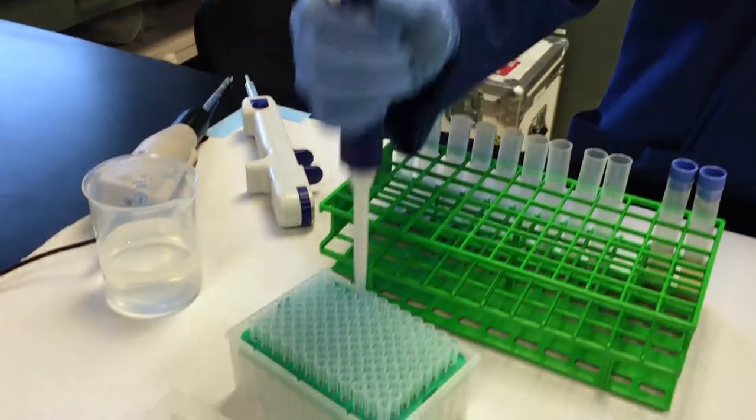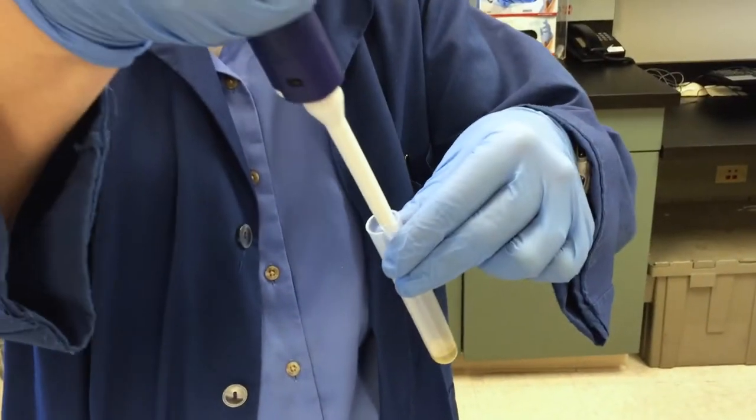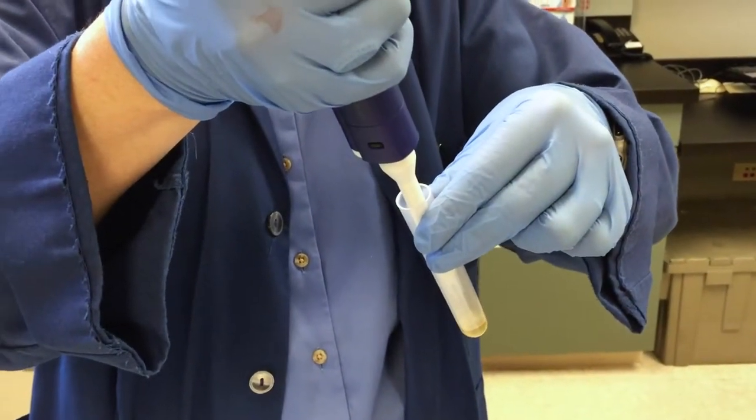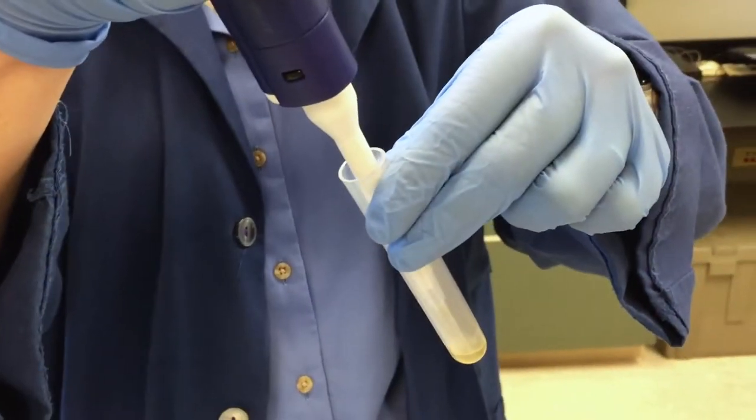I'm just going to demonstrate as that's pouring through. We would then take our pipetter and take out a certain amount of the liquid, which has the hormones in it, no longer the feces, and put it into our test tubes here. We do everything in duplicate.